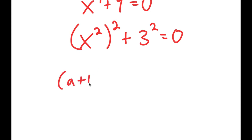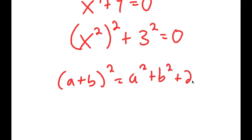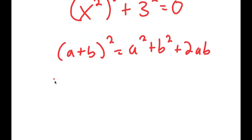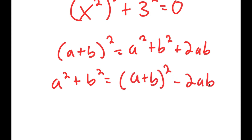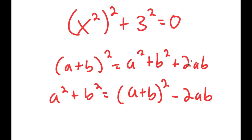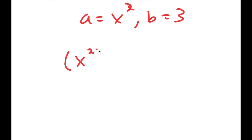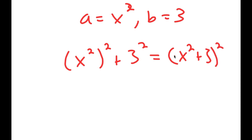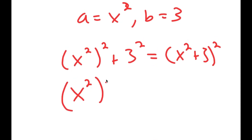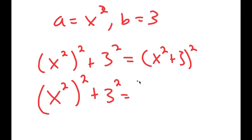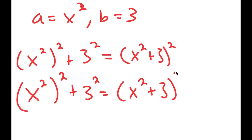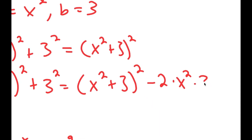If I have something in the form a plus b squared, this equals a squared plus b squared plus 2ab. And if I have a squared plus b squared, this equals a plus b squared minus 2ab, since it's the same thing without the 2ab term. So a equals x squared and b equals 3, giving me x squared to the power of 2 plus 3 squared equals x squared plus 3 squared minus 2 times x squared times 3, all equal to 0.